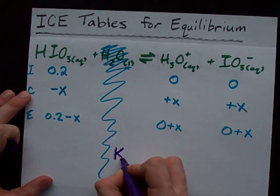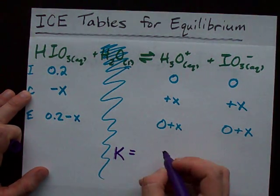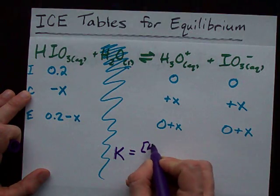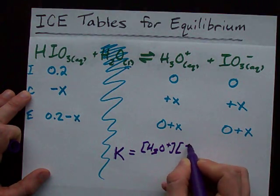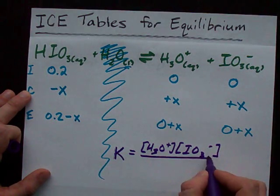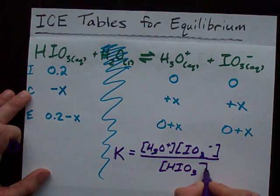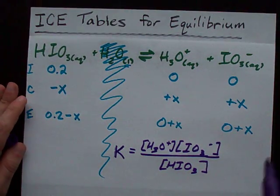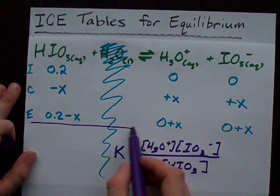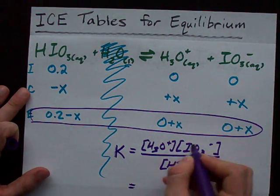The way that we do this is with an equilibrium expression like you've probably already made. We have products over reactants. And remember, you use concentrations of only aqueous and gas phase compounds. Ignore liquids and solids.